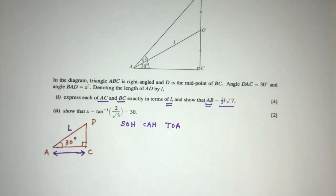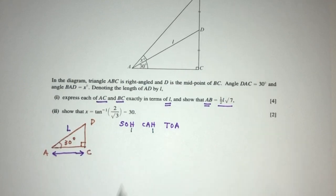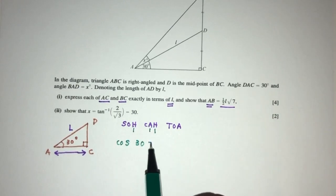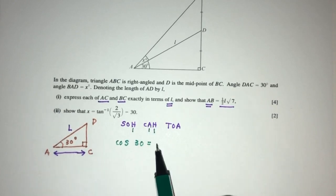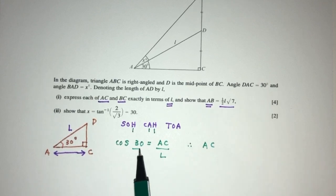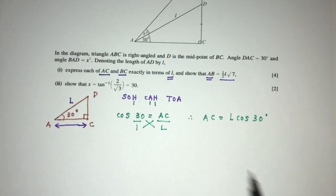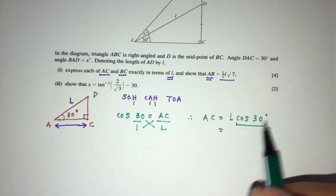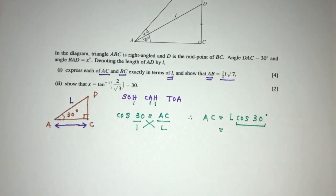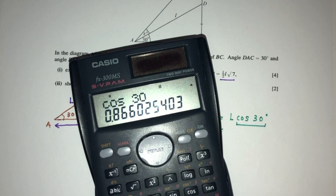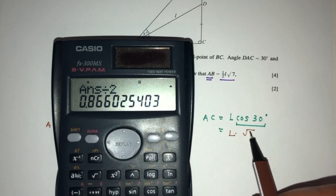Clearly we will have to use SOHCAHTOA because we know this is a right-angled triangle. We know the angle and the side, so we can use SOHCAHTOA to find AC. This is the hypotenuse H, and we're trying to find the adjacent side A. So we use cos. Cos 30 equals AC over L, so by cross-multiplying, AC equals L cos 30.